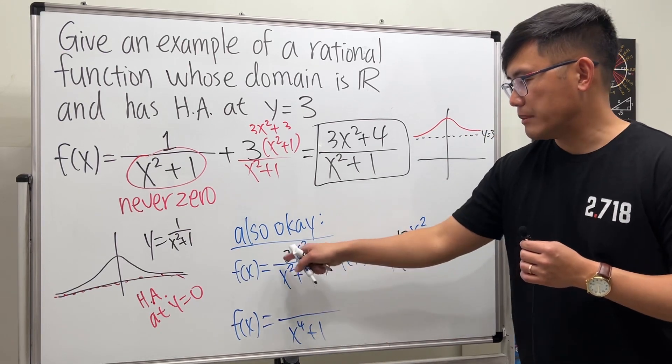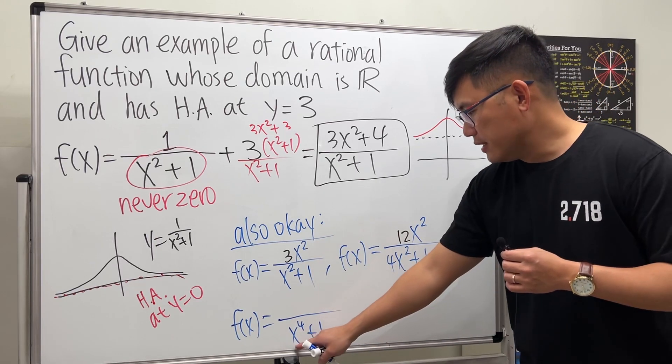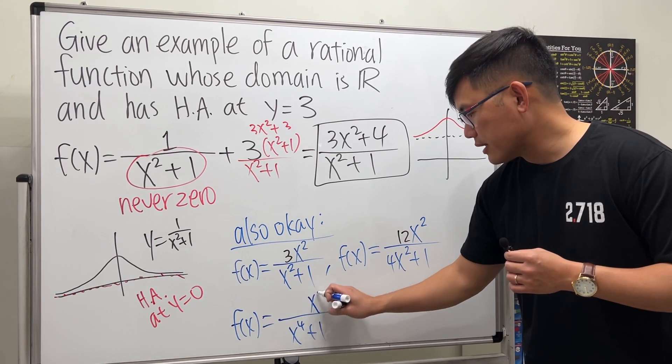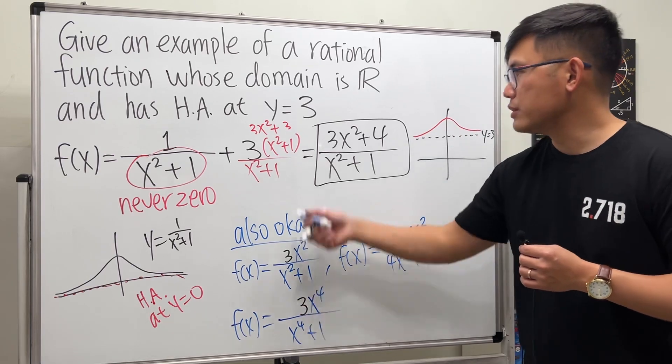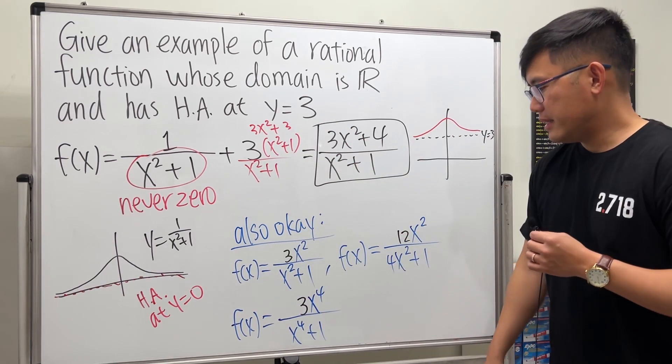X to the fourth power is never negative, and if you add 1 to it, it's always positive, so this right here is never zero. Same idea: if this is x to the fourth on the bottom, I also need x to the fourth on the top.